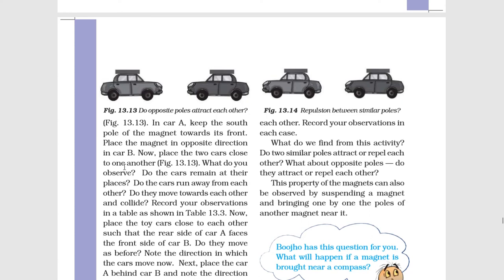Now place the two cars close to one another. Dono car ko ek dusare ke close rakh dena hai. What do you observe? Do the cars remain at their places? Do the cars run away from each other, or do they move towards each other and collide? Record your observations in a table as shown in Table 13.3.